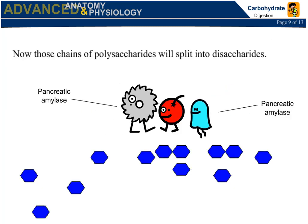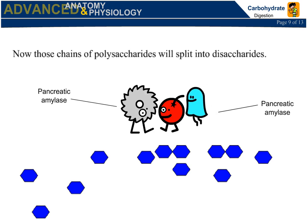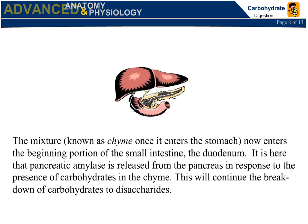Those chains of polysaccharides will split into disaccharides. The mixture, known as chyme once it enters the stomach, now enters the beginning portion of the small intestine, the duodenum. It is here that pancreatic amylase is released from the pancreas in response to the presence of carbohydrates in the chyme, continuing the breakdown of carbohydrates to disaccharides.